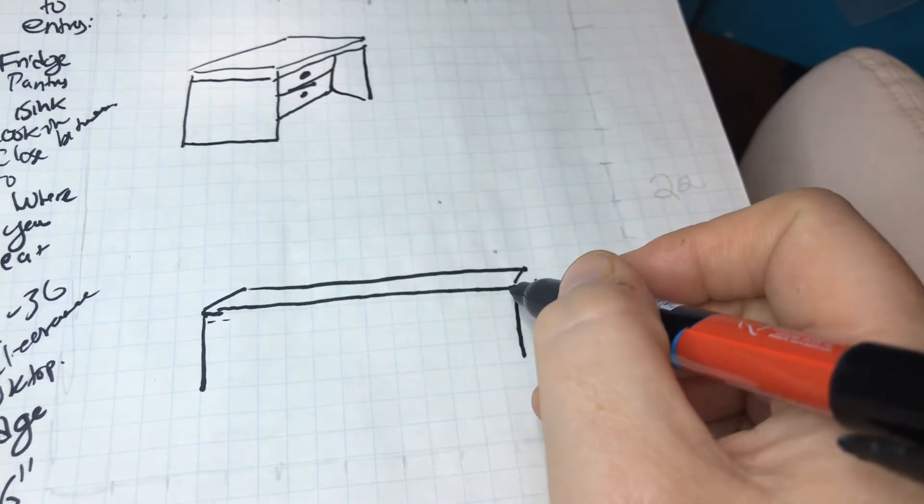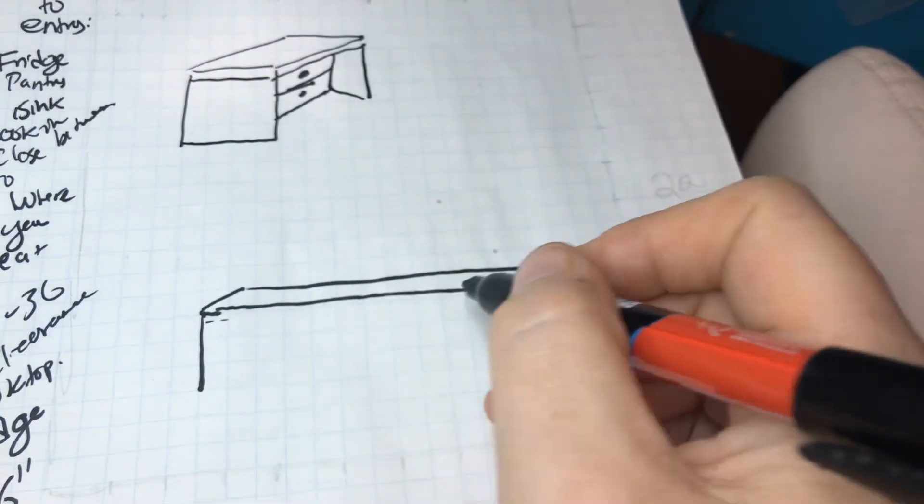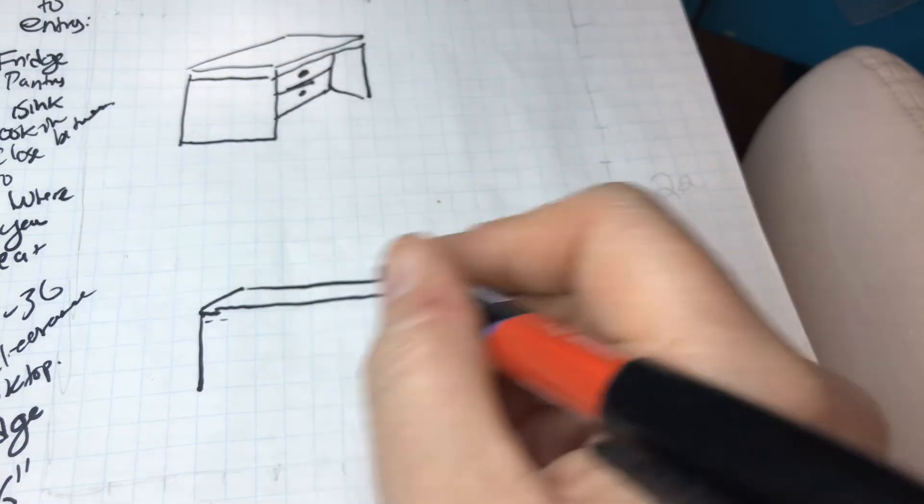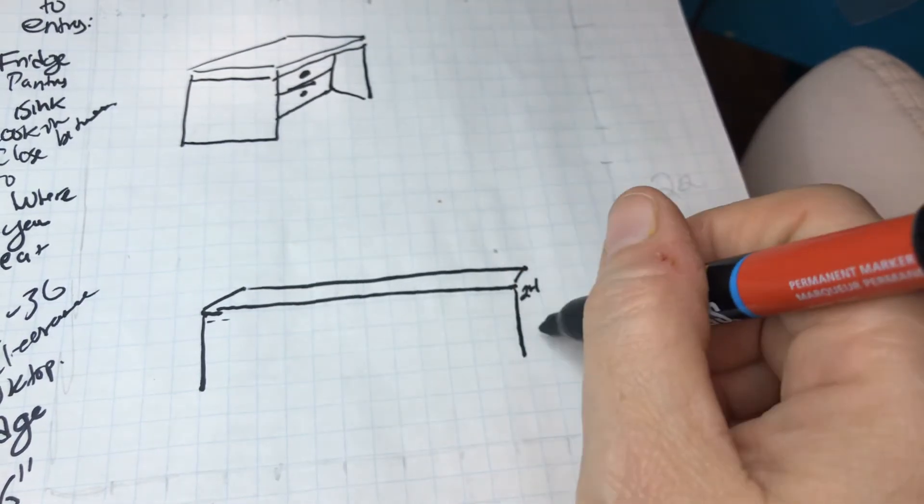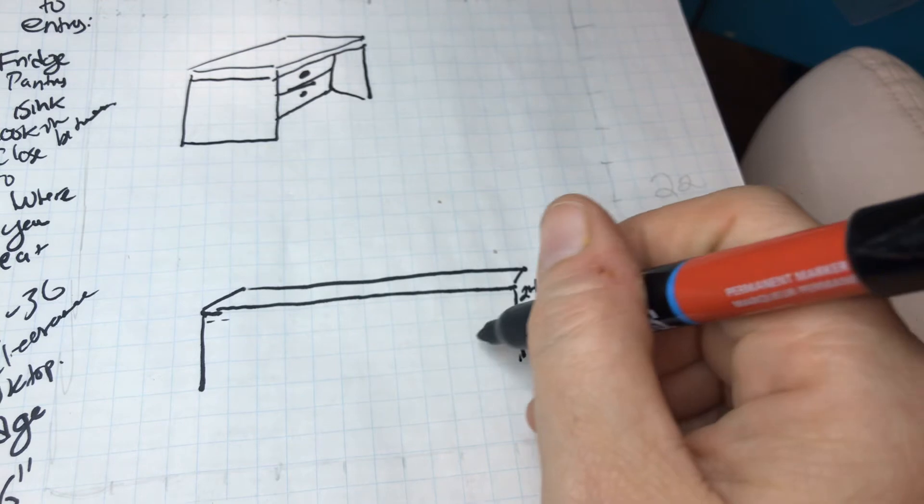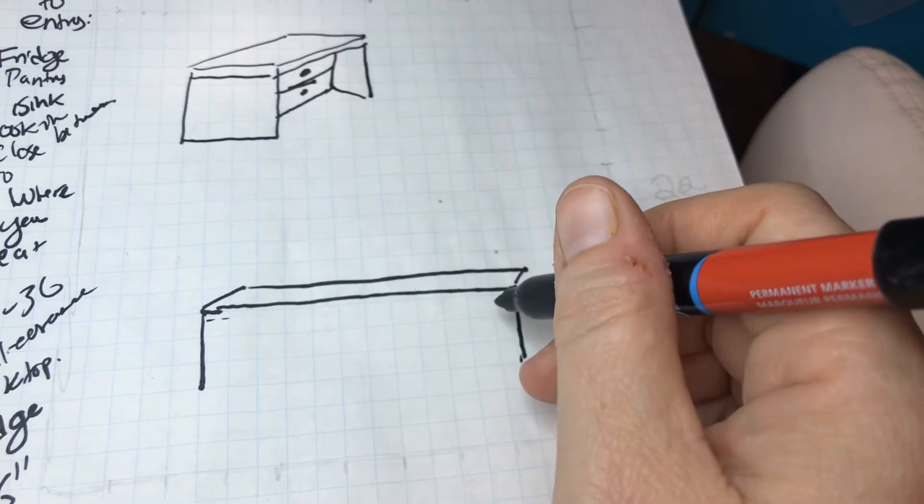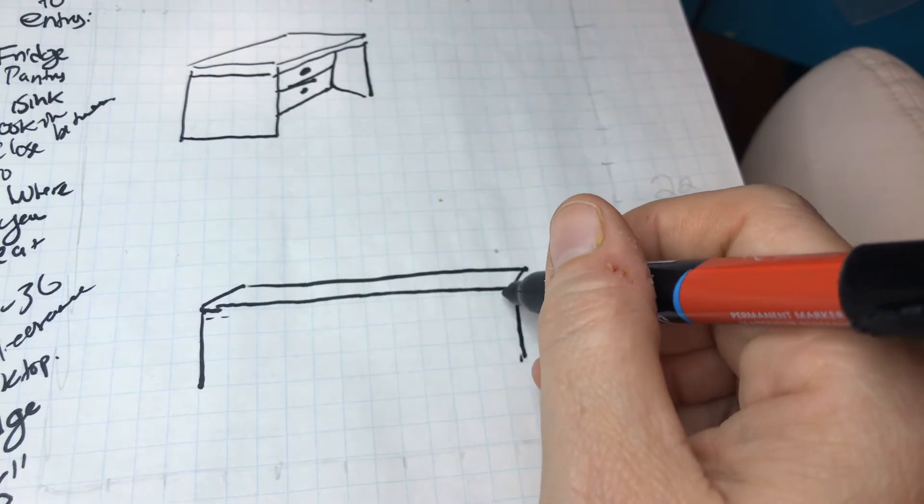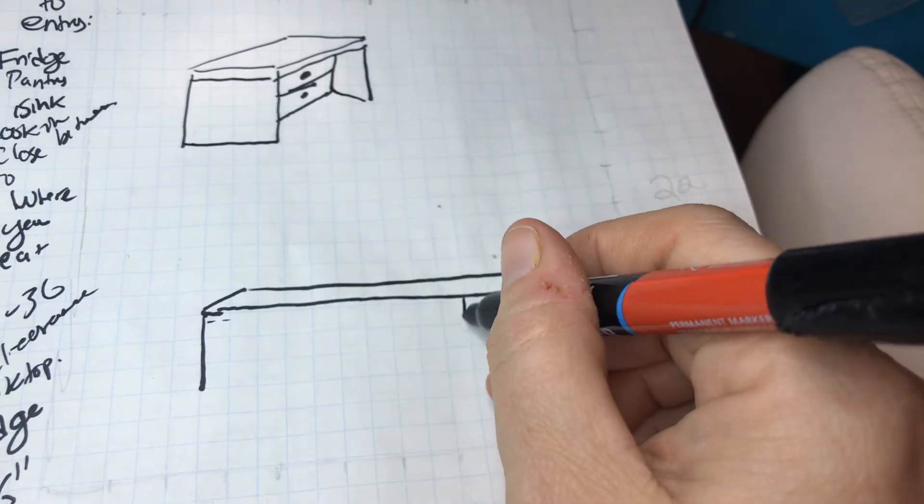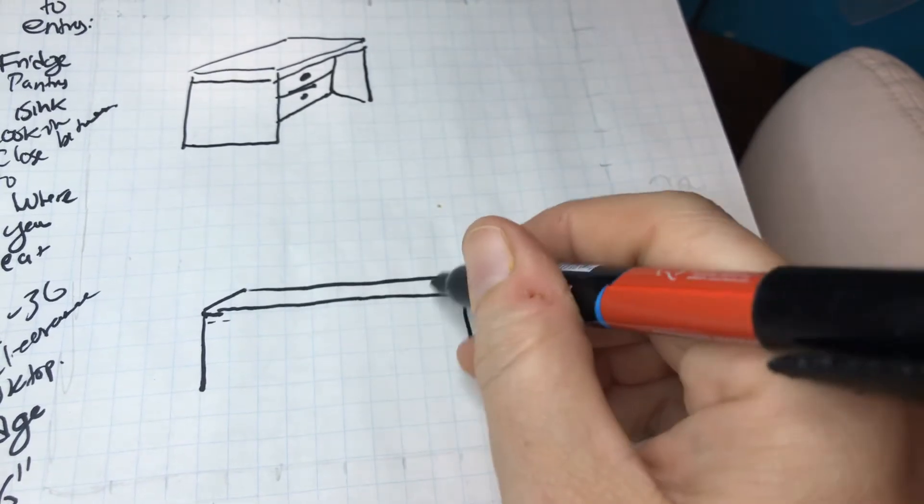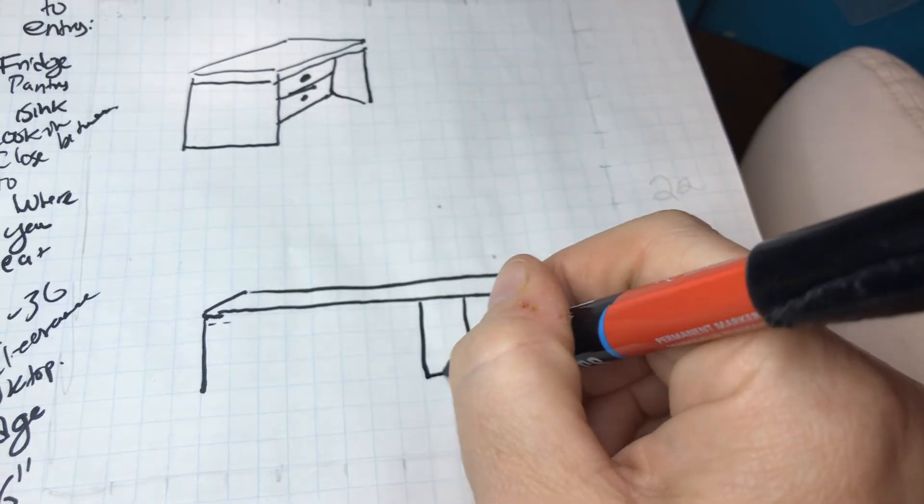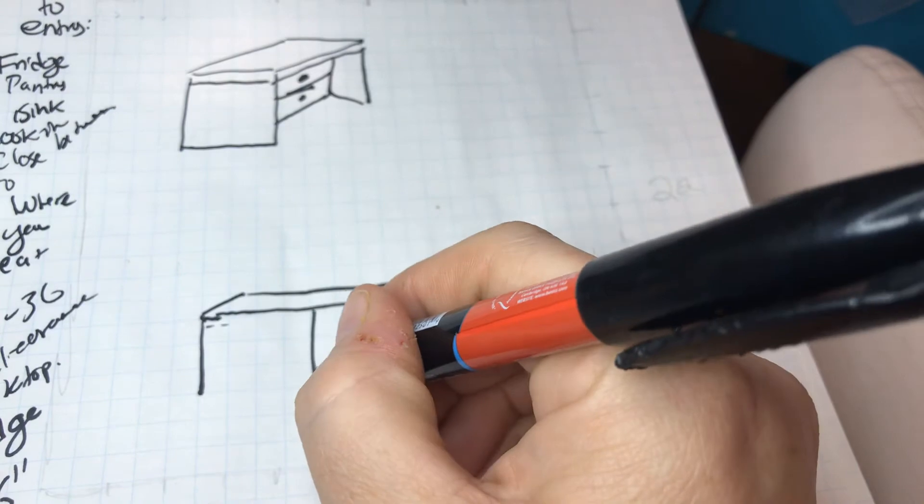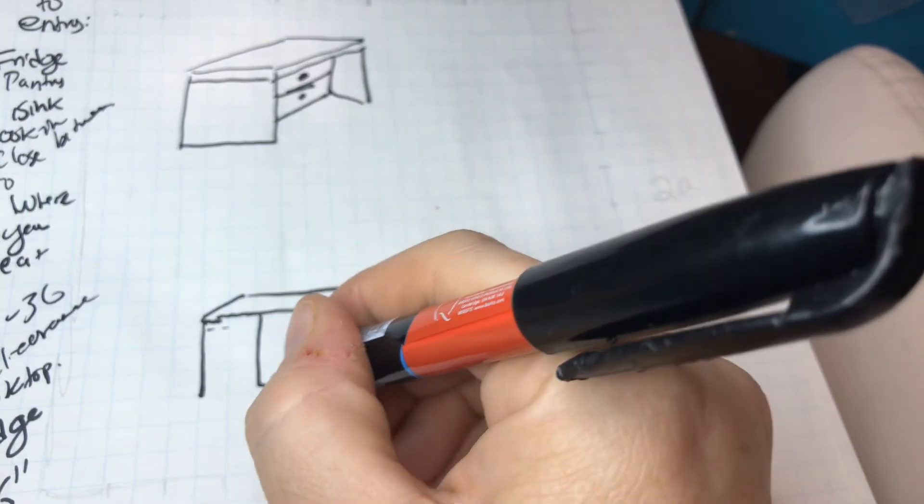And then the length of a countertop can be any length you want. You can design really long countertops, but most base cabinets are 24 inches. So 24 inches is two feet and two feet is two of these. So you'd have a base cabinet here. This is a very long countertop base cabinet. Like this would be a huge amount of storage. Just lovely.